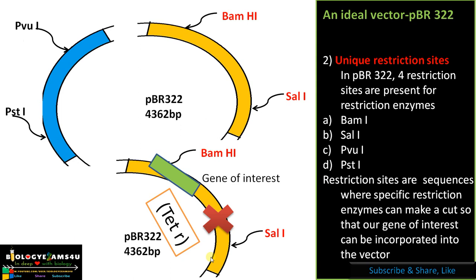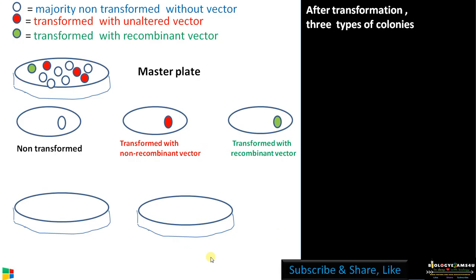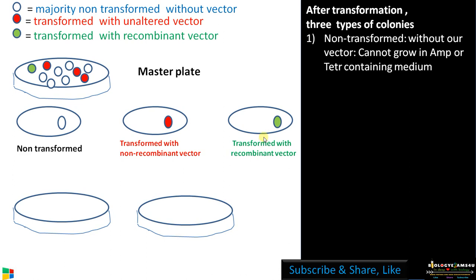Now let us see how insertional inactivation helps in the selection of recombinant colonies. After a recombination experiment, the most difficult part is the selection of recombinant colonies with our gene of interest. At the end of the experiment we will have three types of colonies: first, non-transformed; second, transformed with non-recombinant vector (the vector has entered the host but is unchanged); and third, transformed with recombinant vector — containing our gene of interest.